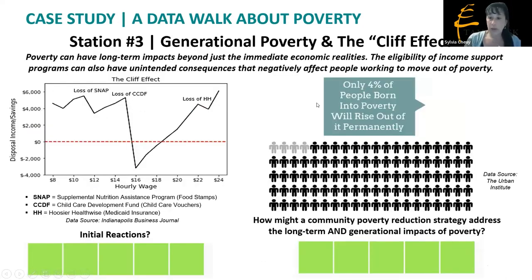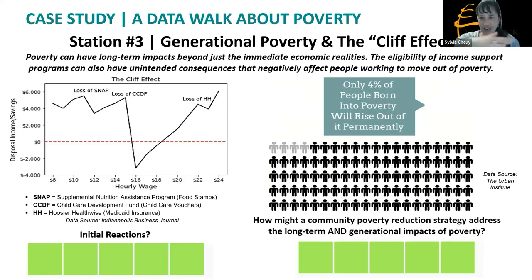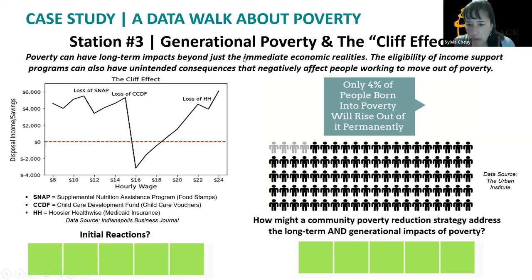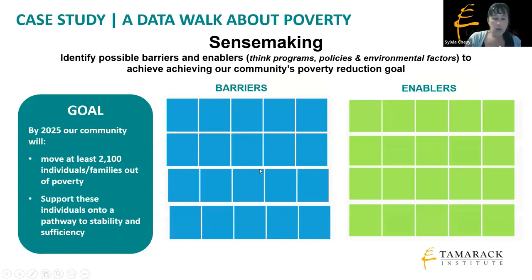This station talks about the fact that poverty can have long-term impacts beyond immediate economic realities. Many income support programs have unintended negative consequences because they cut you off once income goes above a certain level, but that level isn't enough to replace what's lost. In this community, only four percent of people born in poverty actually get out of poverty. The question posed: 'How might our community poverty reduction strategy address not just the immediate but also the long-term and generational impacts of poverty?'